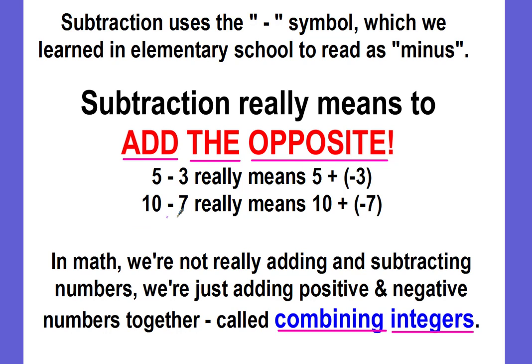10 minus 7 really means 10 plus the opposite of 7, which is negative 7. So in math, we're not really adding and subtracting numbers. We're just adding positive and negative numbers together, which we call combining integers.